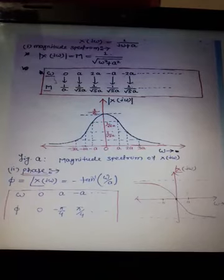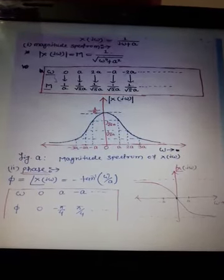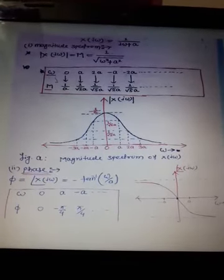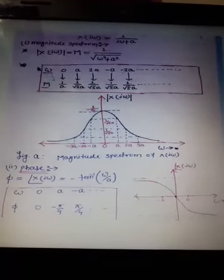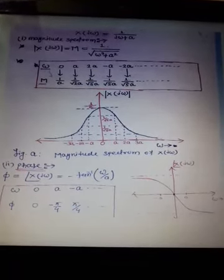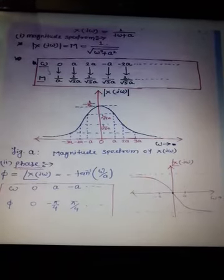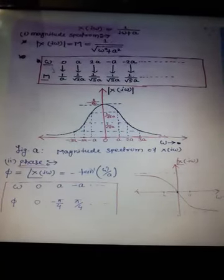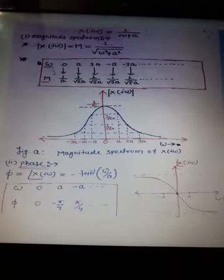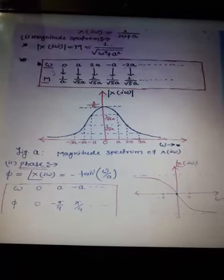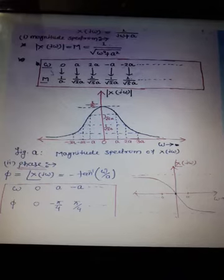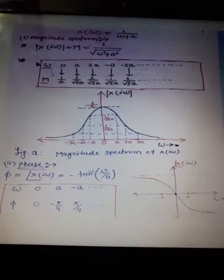Figure (a) shows the magnitude spectrum of X(jω). For the phase spectrum, we compute φ at different values of ω: at ω = 0, φ = 0; at ω = a, φ = −π/4; at ω = −a, φ = π/4. Figure (b) shows the phase spectrum of X(jω).